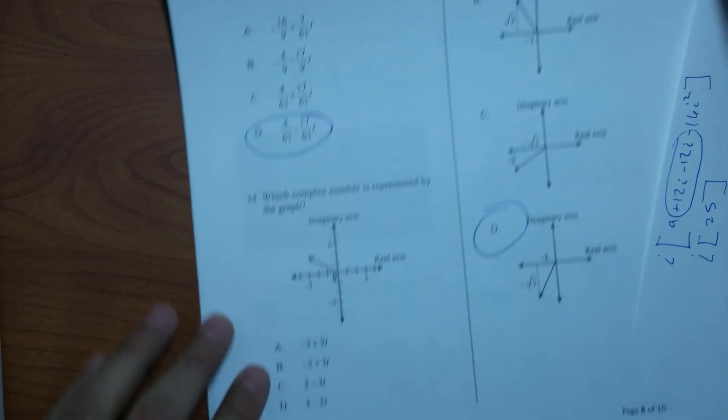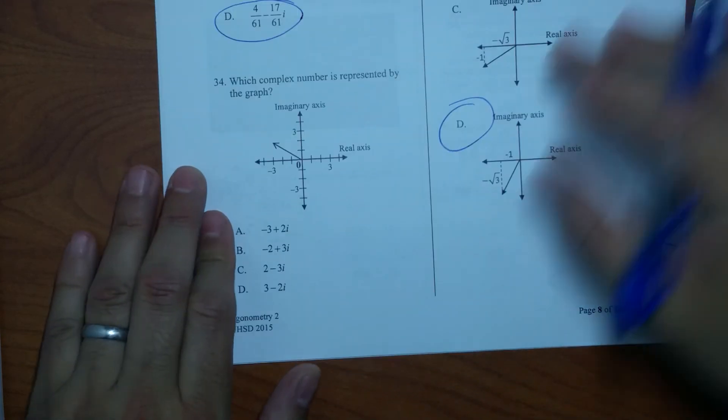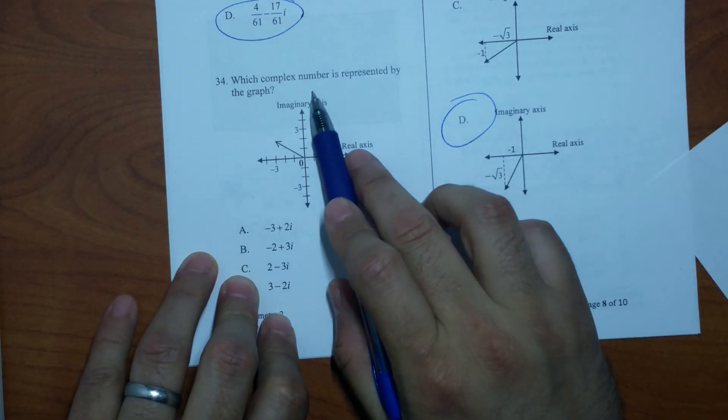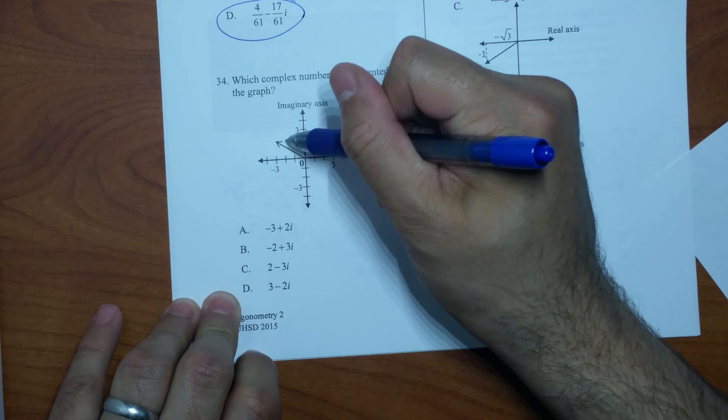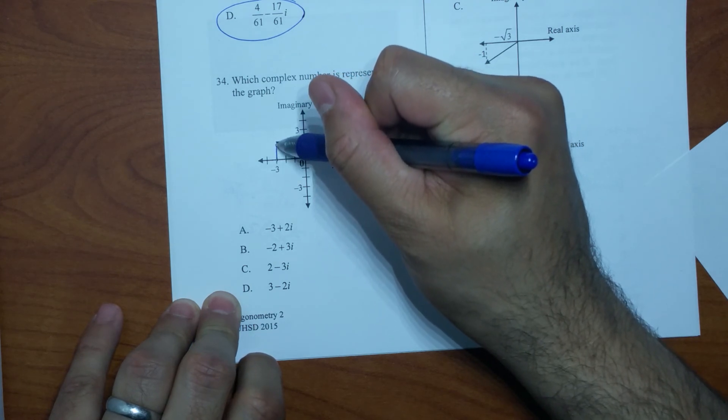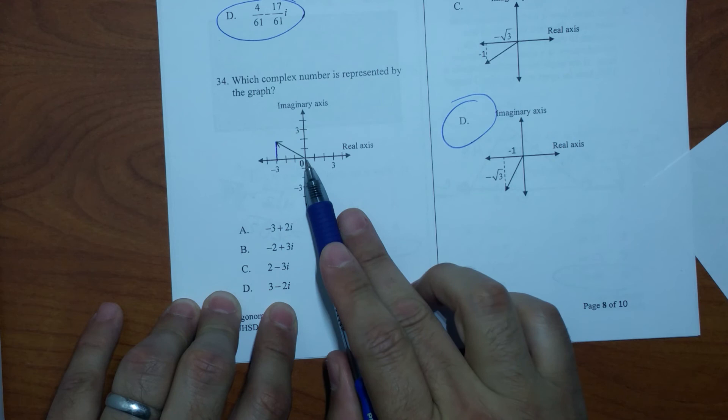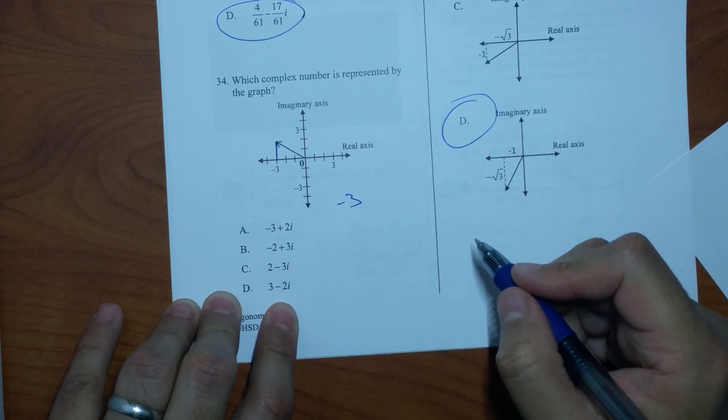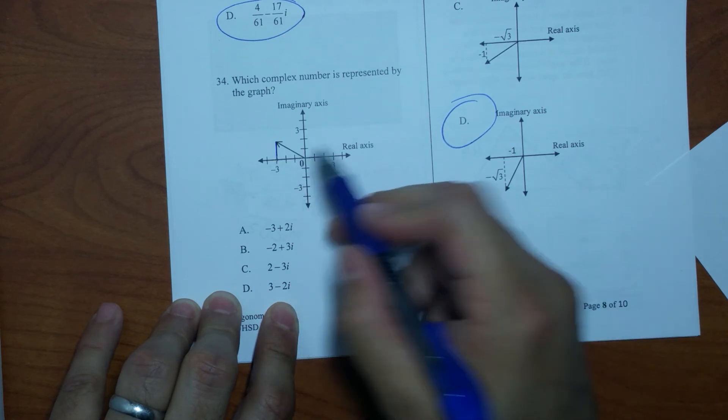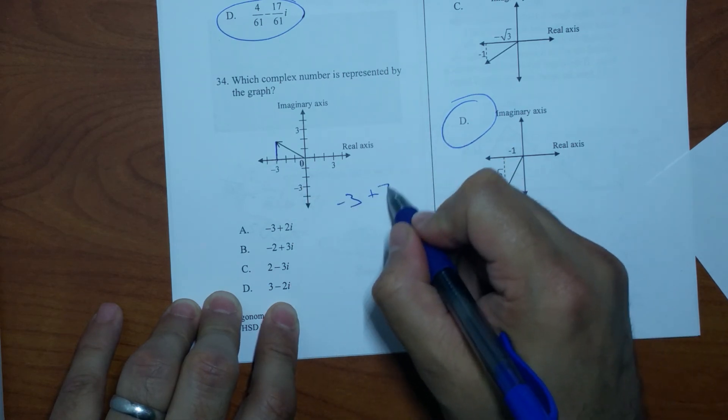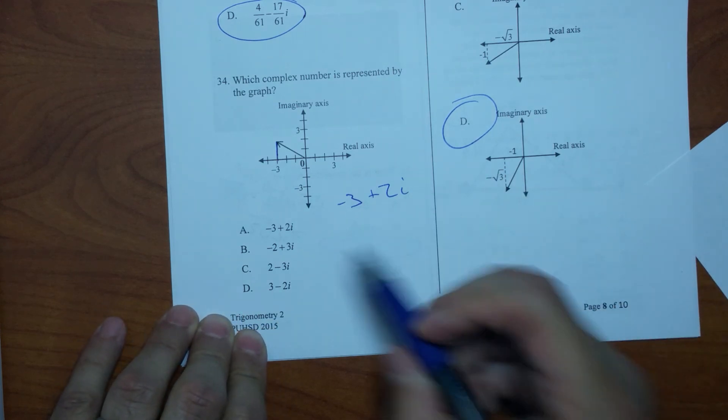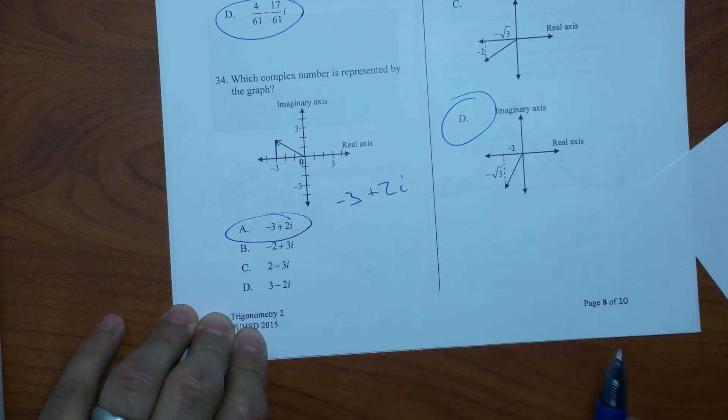Last problem before I take a break on this one here. So on number 34, which complex number is represented by the graph? What quadrant is it going to be? 2. It's in quadrant 2, so then that means I'm going to go how far? 3, negative 3 in the real, and then how much am I going up? 2. So it's going to be plus 2i, right? So therefore my answer has to be... Don't forget to like and subscribe. I still got five questions to go.